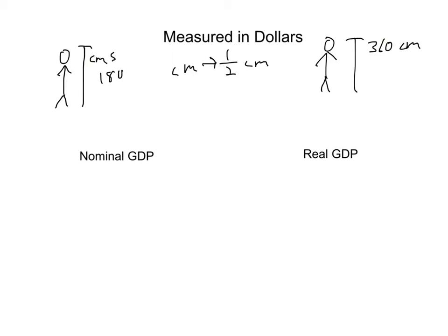The same thing can happen with GDP because it's measured in dollars. It can look like GDP is growing even when GDP really isn't growing, if there's inflation. So here I'm going to introduce a couple of important terms. One is nominal GDP. Nominal is a word meaning in name only. Nominal GDP is GDP measured in current prices.